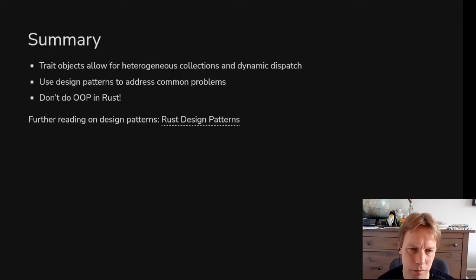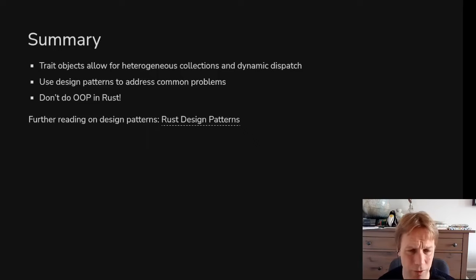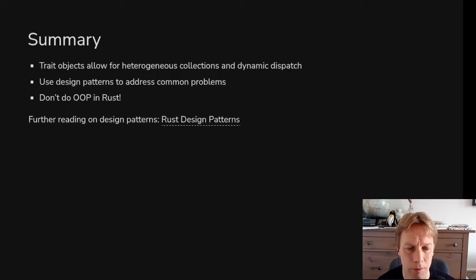Just to summarize what we've covered in module D: we talked a lot about dynamic dispatch and trait objects and why there are certain rules around what you can do in a trait if it's going to be a trait object. We talked about some design patterns — good ways of writing Rust code. We talked about things you shouldn't do in Rust, especially don't pretend you've got inheritance by using Deref because it's just confusing and it isn't inheritance. There's also a link to more design pattern stuff. Thanks for watching — next time we'll do some exercises. Hope you enjoyed. Don't forget to subscribe, and see you next time.